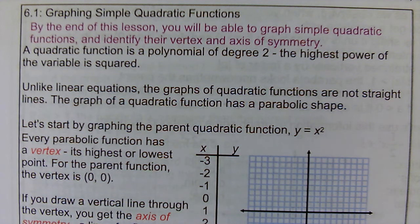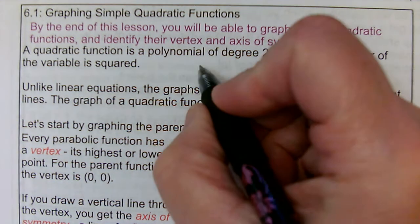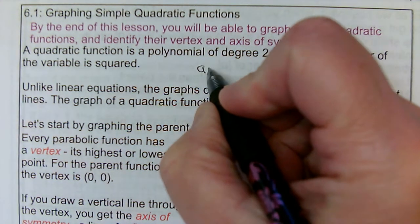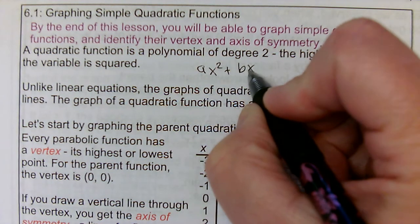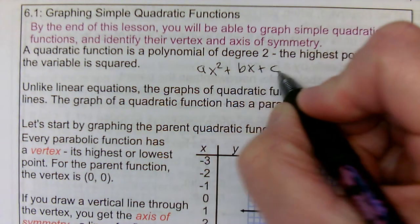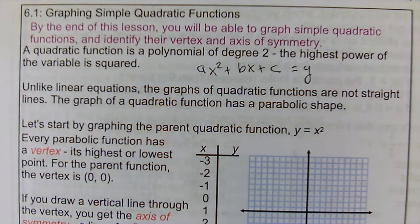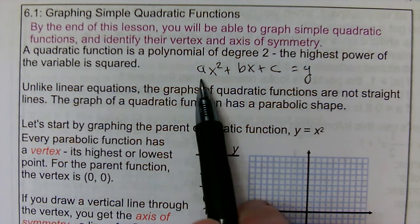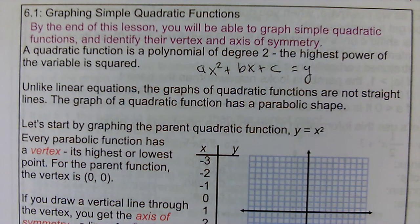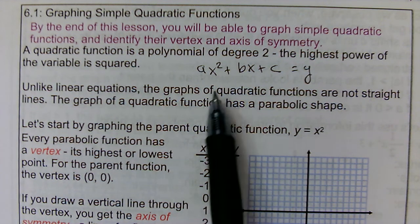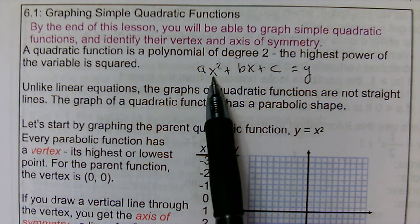A quadratic function is, in standard form, ax squared plus bx plus c equals y. a, b, and c are parameters that change depending on the function. But the key part that makes it quadratic is that the variable x's highest power is squared.